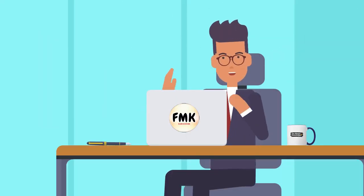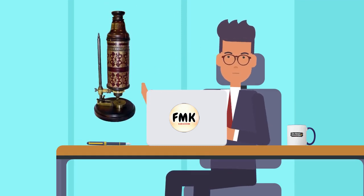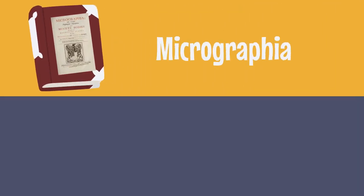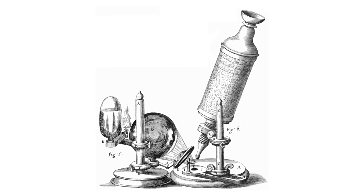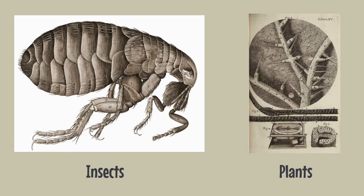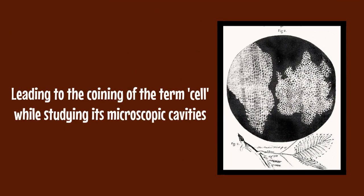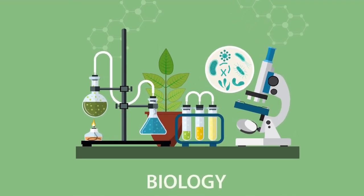One of Hooke's most significant contributions was his work in the field of microscopy. He created an advanced microscope, and through his observations, he made groundbreaking discoveries. His publication Micrographia from 1665 became a scientific sensation, featuring detailed illustrations and descriptions of various specimens observed under the microscope. This involved examining the intricate structure of insects, plants, and even the composition of cork, leading to the coining of the term 'cell' while studying its microscopic cavities.